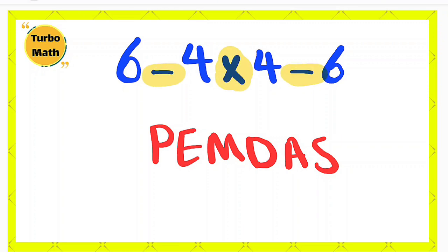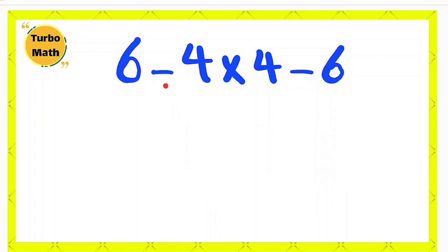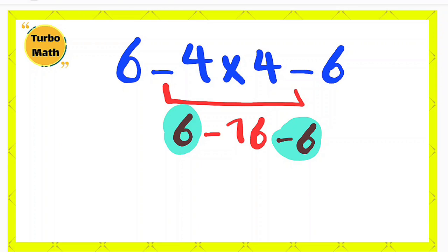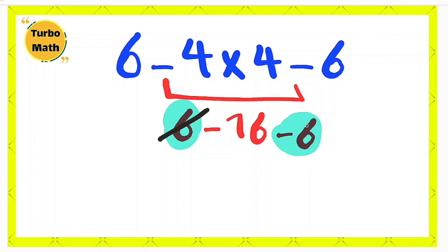We have one multiplication and two subtractions. Because multiplication has higher priority than subtraction, first we do the multiplication: -4 × 4 = -16, and we simplify to get the new expression. Because there are positive and negative numbers on both sides, they are simplified and we get the final answer.